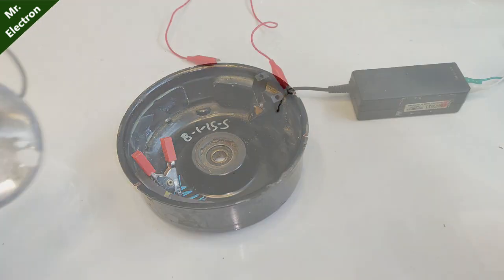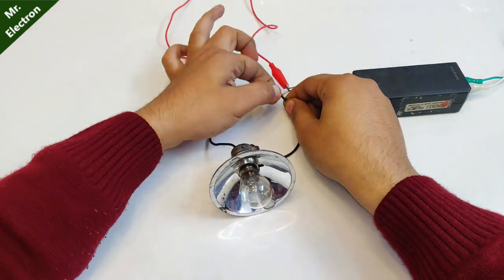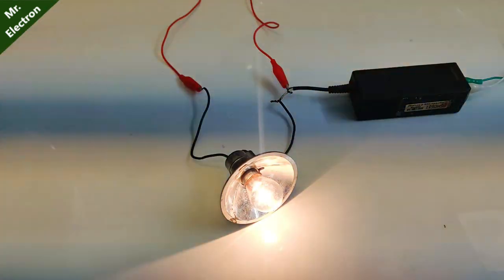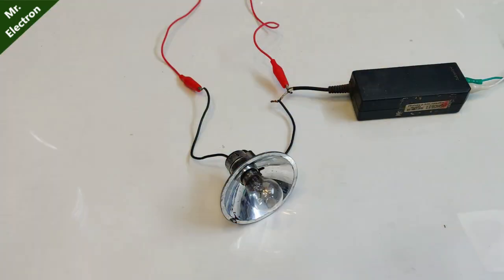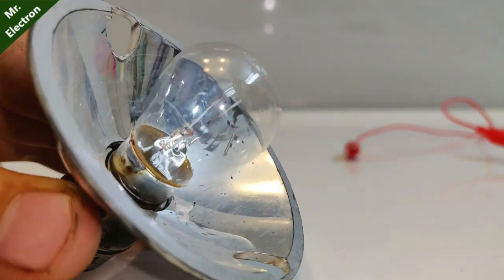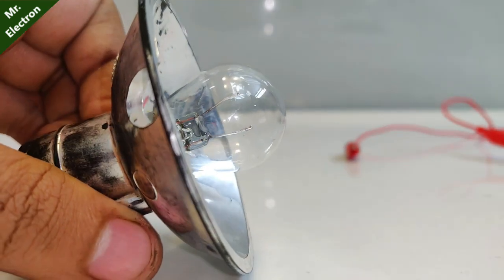Now let's consider the case of what will happen if we connect a 20 volt supply to a 12 volt 1 ampere bulb. The bulb will fuse instantly because more than rated current will flow through the filament and burn it.